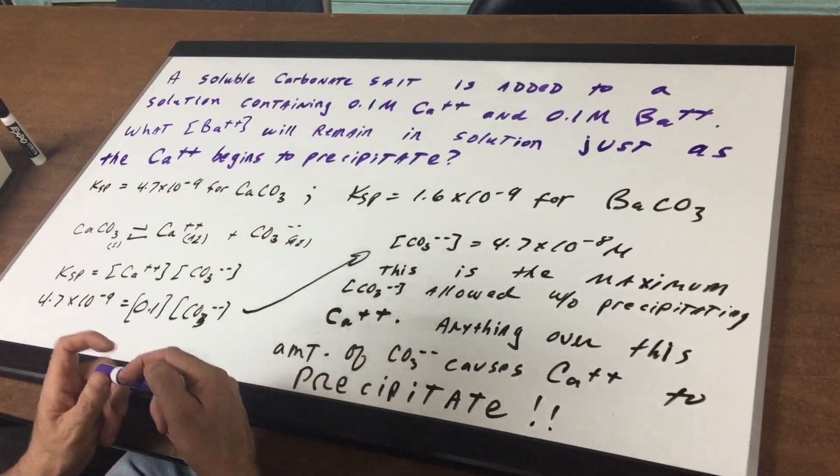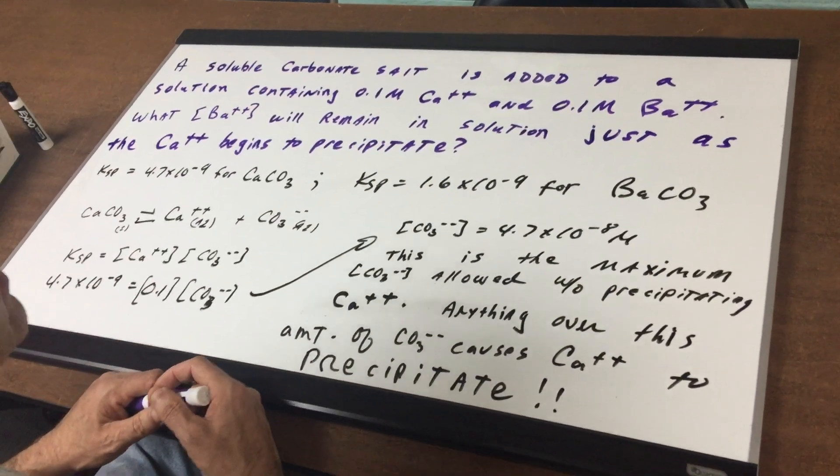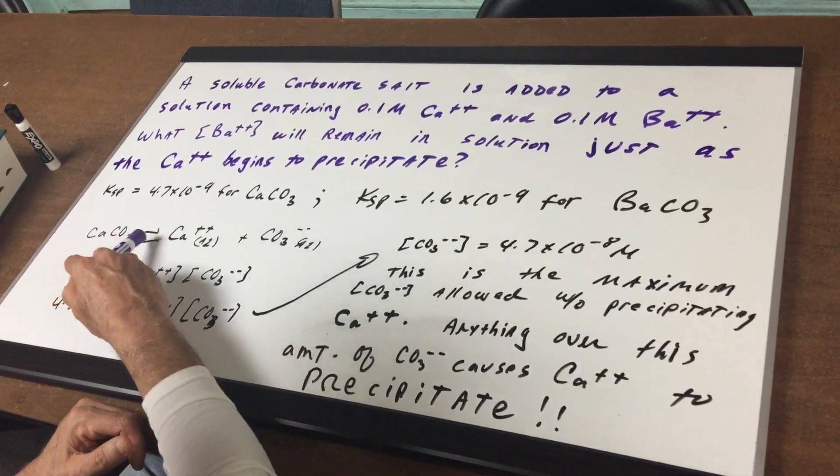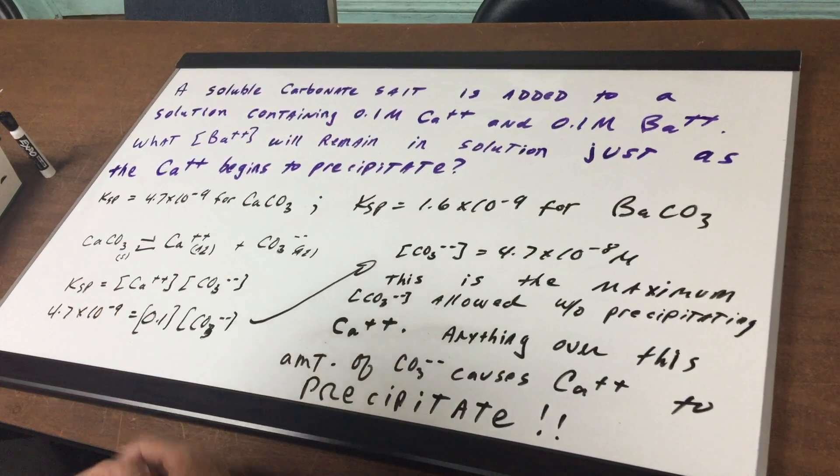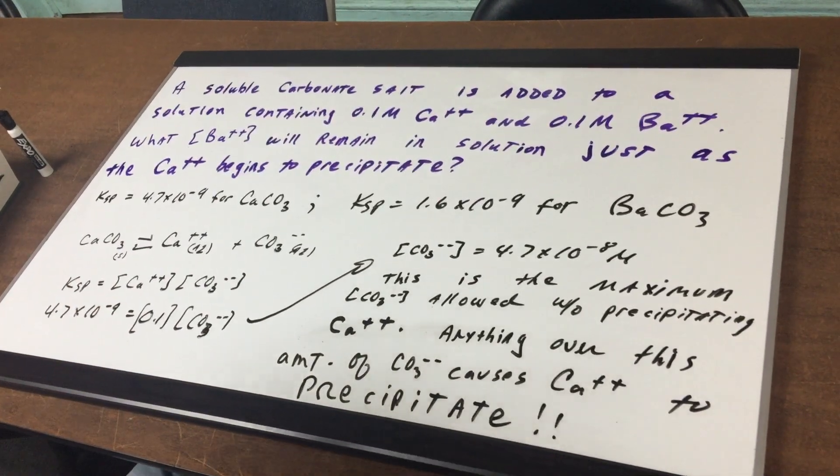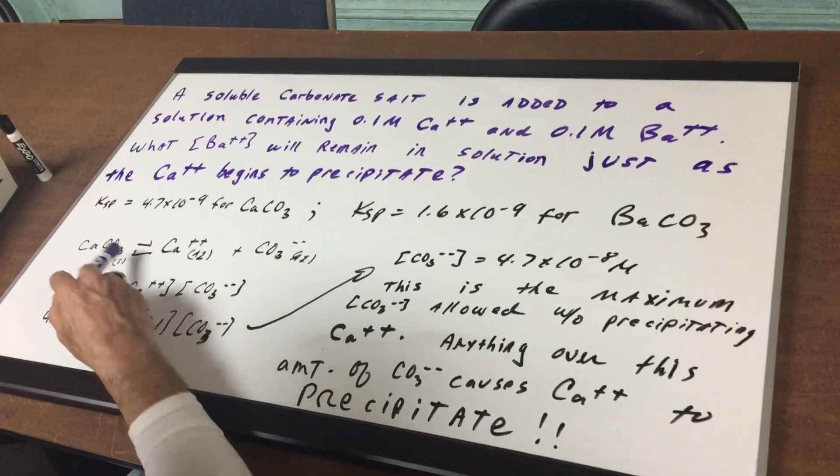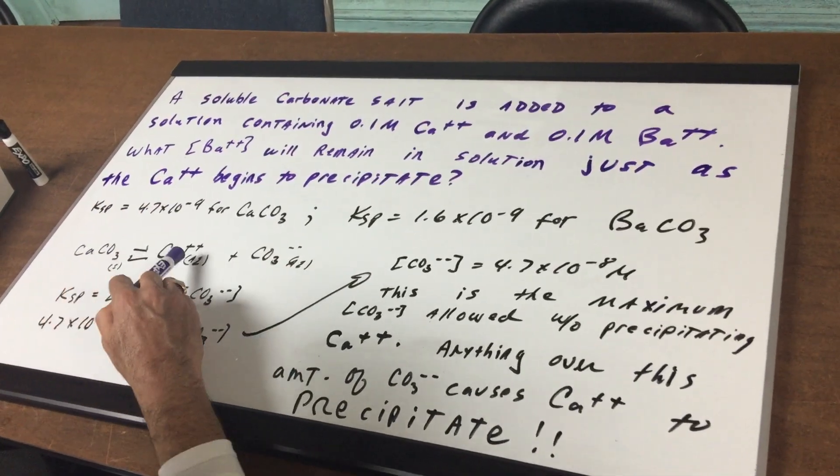Since the calcium ions we're interested in, it says it's going to precipitate, I'm going to first write the KSP expression for calcium carbonate. Calcium carbonate is a solid. Anything they give you the KSP for, you know it's a solid.